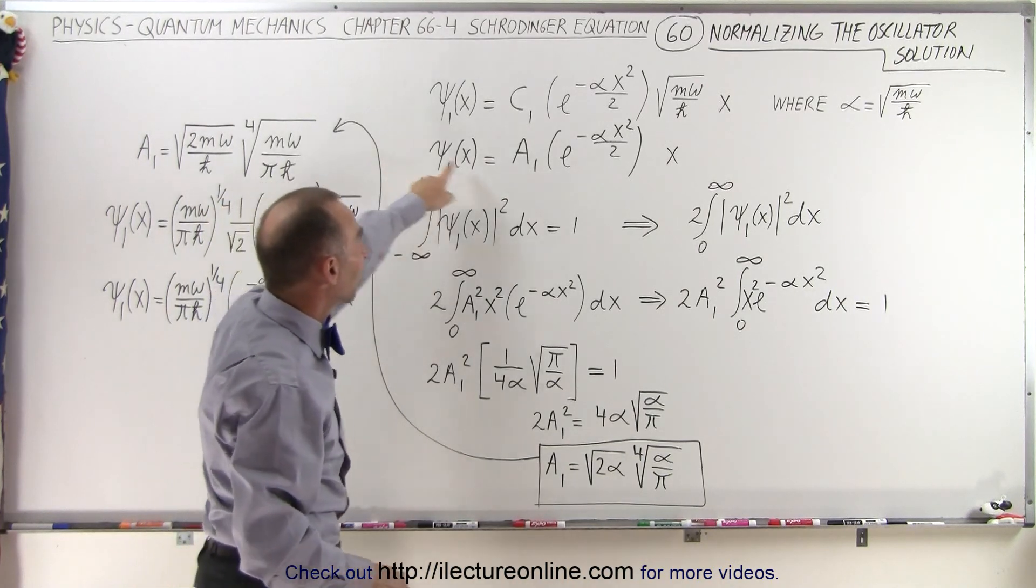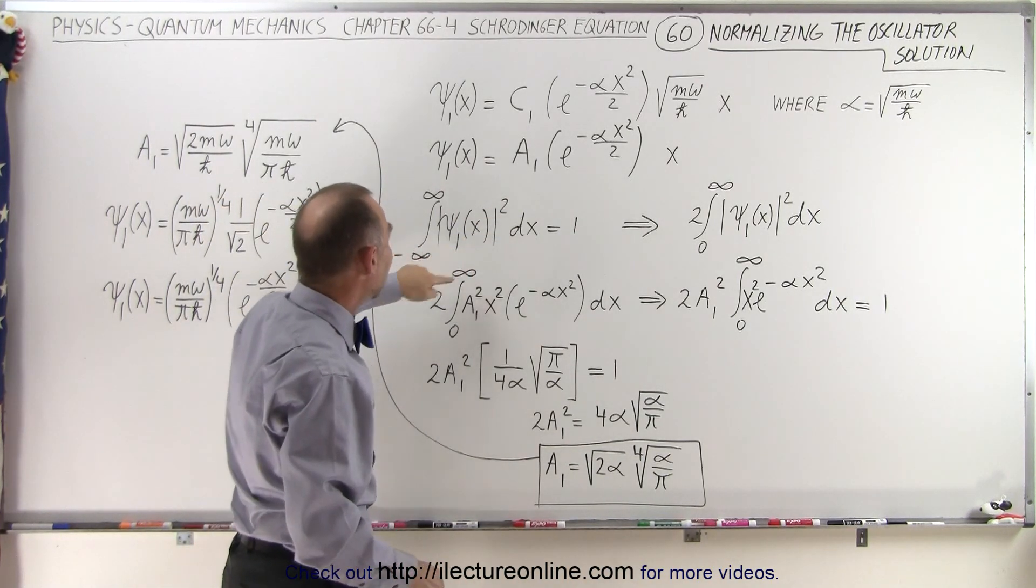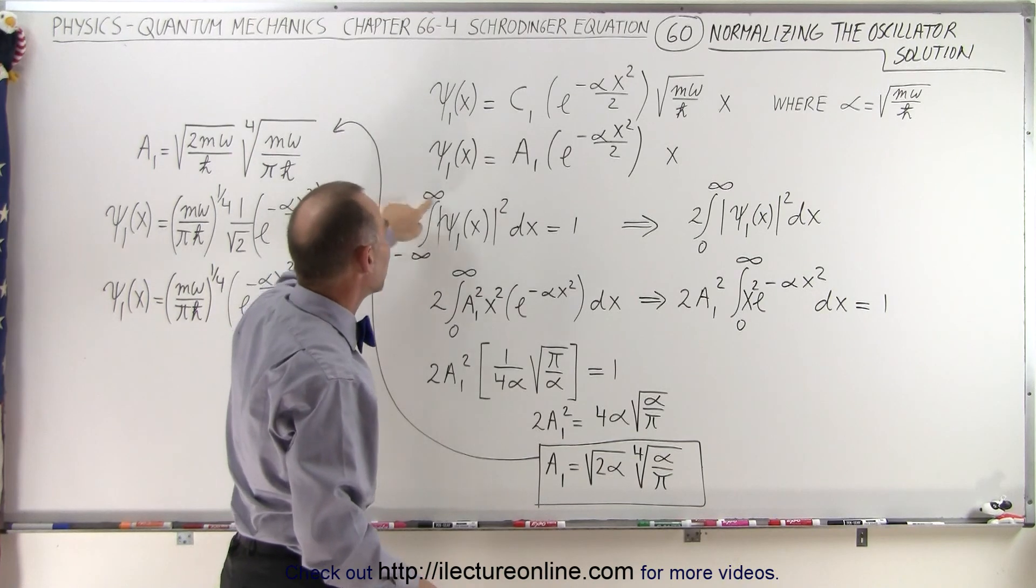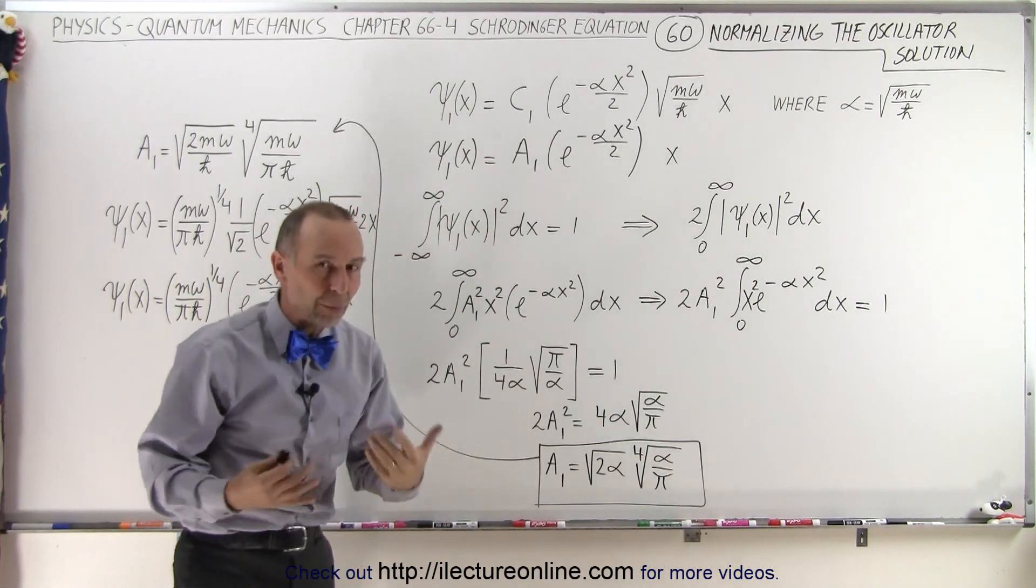So what we need to do now is take our function, square it, and integrate it from minus infinity to infinity, and set it equal to 1. That's how we normalize it.